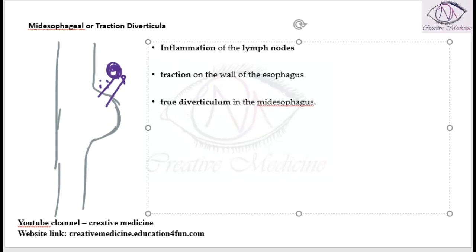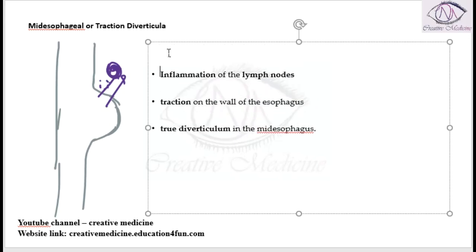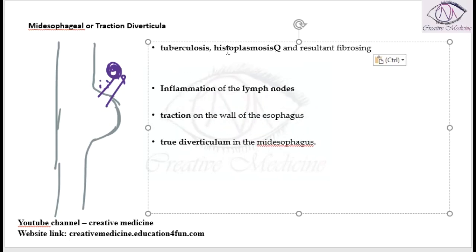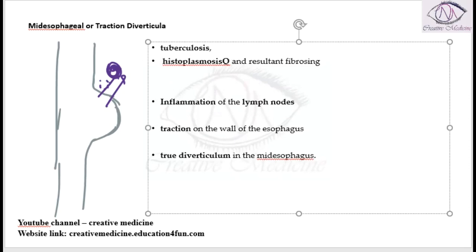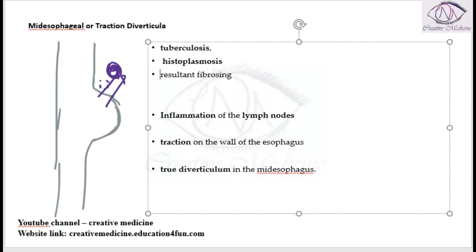But why are there inflamed lymph nodes? It can be due to conditions like tuberculosis, histoplasmosis, or fibrosing mediastinitis. Sometimes fibrosing mediastinitis will also cause inflammation of lymph nodes, which causes traction on the wall of the esophagus resulting in a true traction diverticulum.